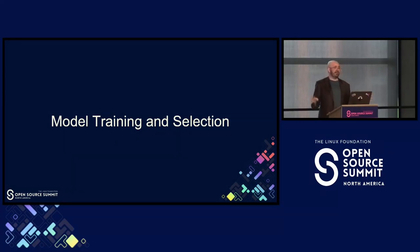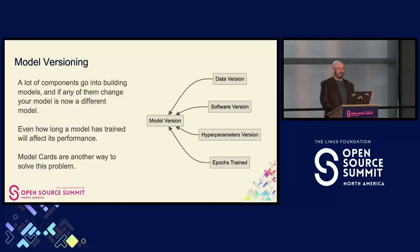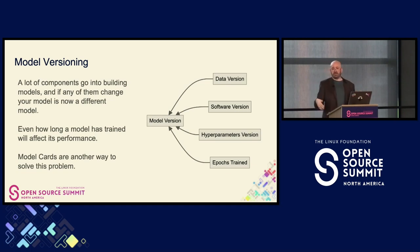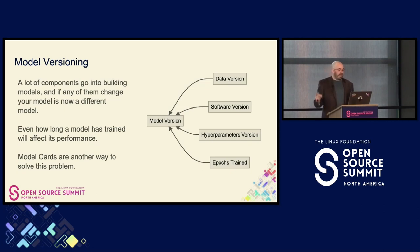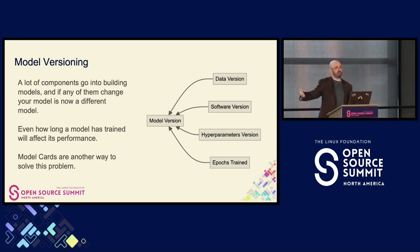Model training and selection is another big topic. A big question is how do you actually version your model? There's a lot that goes into building a model: the data, the software — how many layers, what algorithms — and the hyperparameters. You can have the same software and the same data but with different hyperparameters and get completely different results. You can also have the same data, same software, same hyperparameters, but one model trained longer — which also makes it a different model. And training it longer doesn't necessarily mean it got better; sometimes it can get worse. That's why when you're comparing models, you need to look at them throughout the training lifecycle.